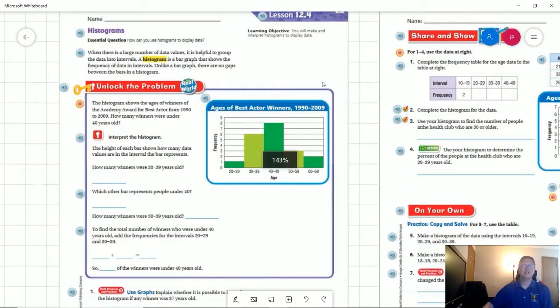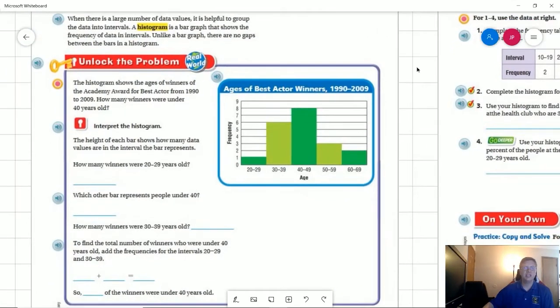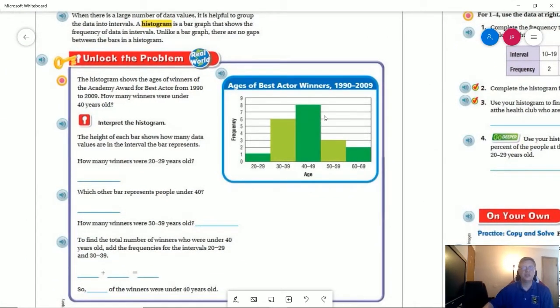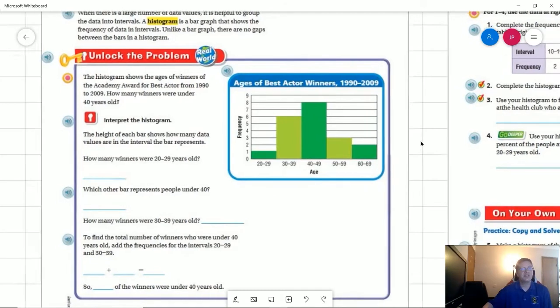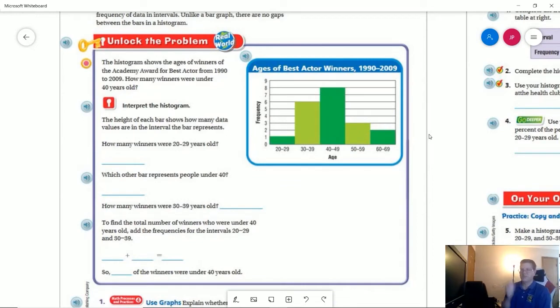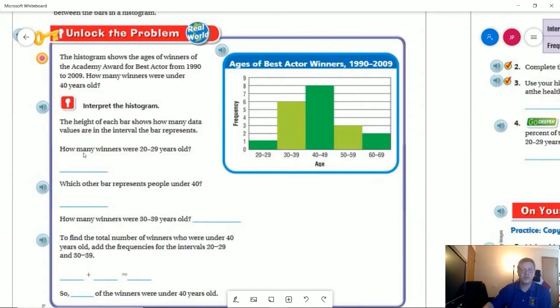Histograms give us a set of data values all combined into one generalized graph. The benefits of that are that we can include lots of different points of data and we don't have to have a very large complicated graph that shows every single data point.